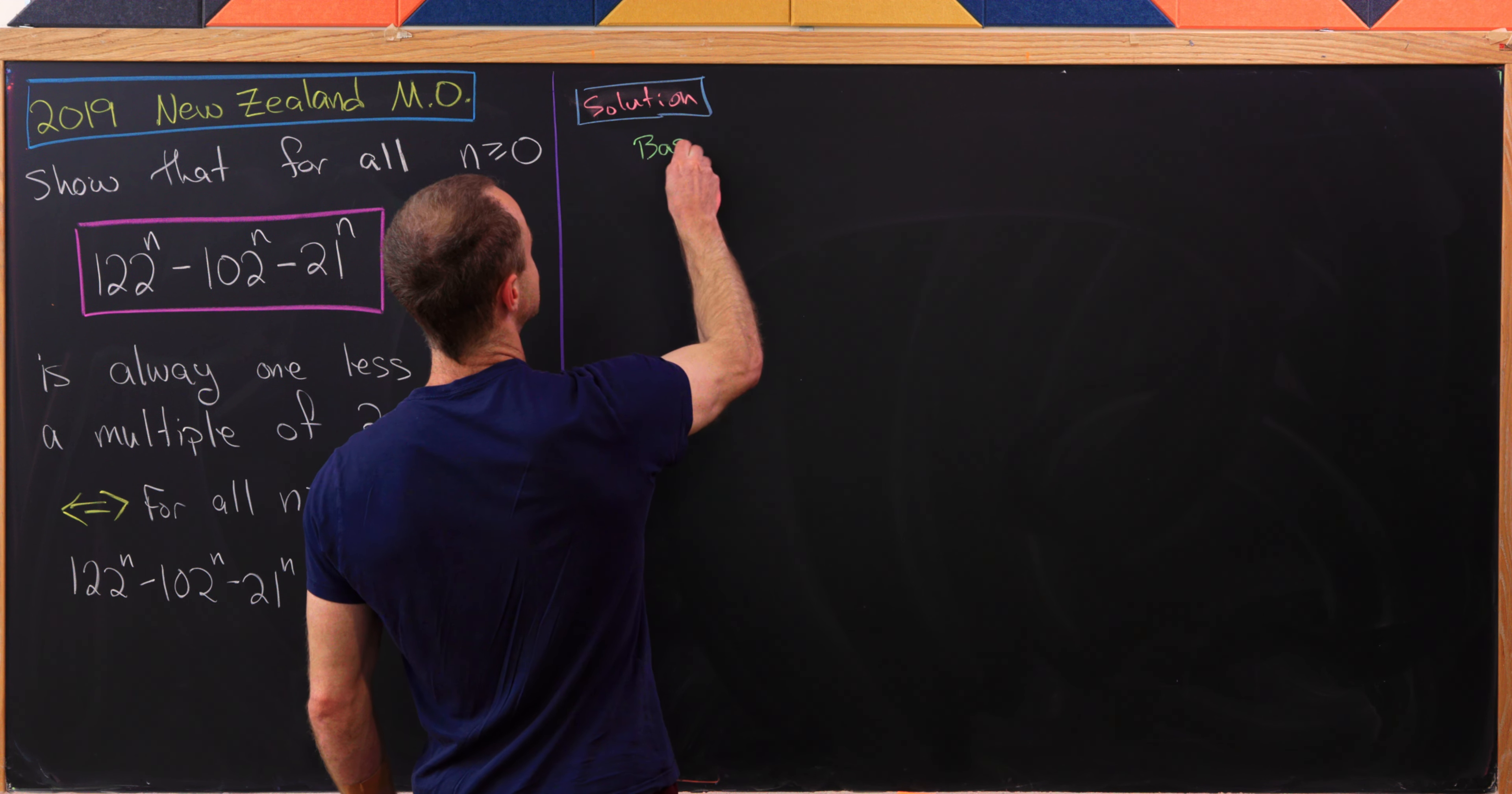And now we'll do binomial expansion on these two terms right here, where the role of the first variable is being played by 101 or 20 respectively, and the second variable is just 1. So by binomial expansion formula, this gives us 20 times the sum as j goes from 0 up to k, we have our binomial coefficient k choose j, and then 101^j. And then likewise, we have 101 here, the sum as j goes from 0 to k of k choose j times 20^j, and then minus 122, and that's all working mod 2020.